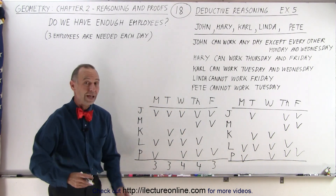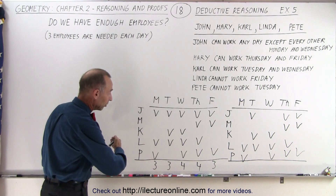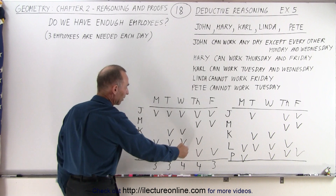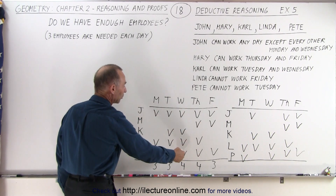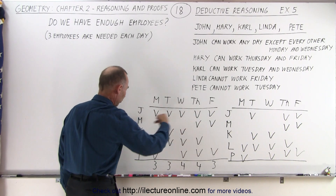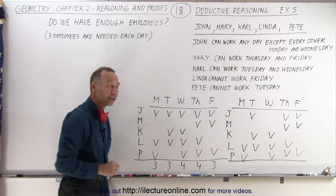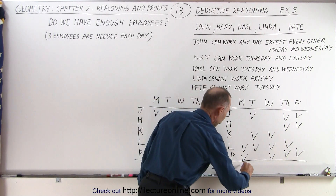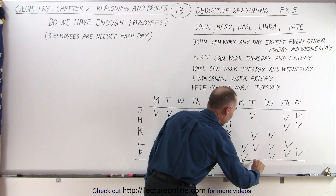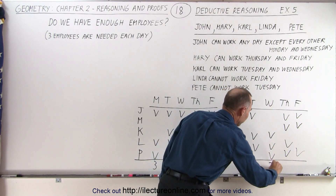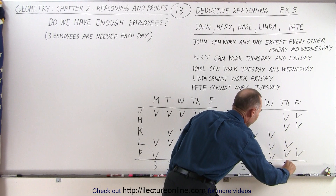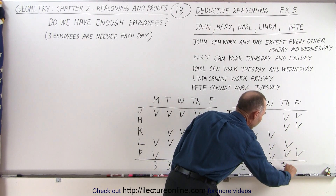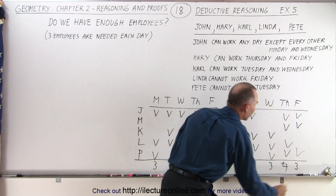That means we have enough employees to schedule at least three for every day of week one. We can even choose not to have someone come in on Wednesday or Thursday since we have extras. How about week two? For Monday we have two, Tuesday three, Wednesday three, Thursday four, and Friday three.